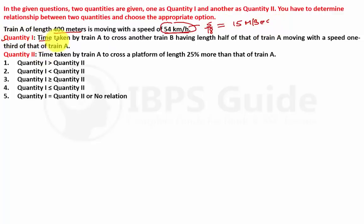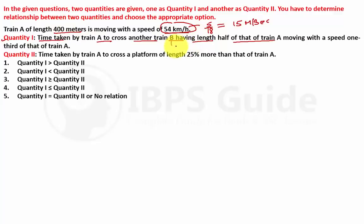Quantity 1: time taken by Train A to cross another train. Both the lengths of Train A and Train B should be added. Train B has a length half of Train A, which means 200 meters, and is moving with a speed of one-third of Train A, that is 15/3 = 5 meters per second.